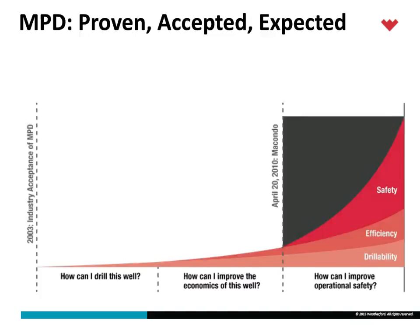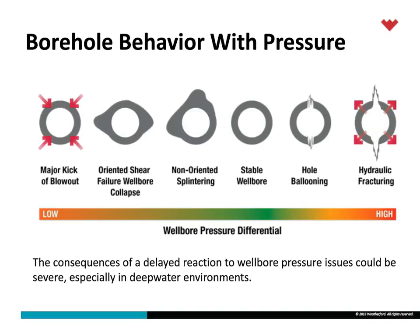This slide is the basis for all the technology we're using. From the far right-hand side of the screen, which is hydraulic fracturing of a weak reservoir, an under-pressured reservoir, an unconsolidated reservoir — because the mud weights are too high, or because the equivalent circulating density due to pump rate or viscosity is causing bottom hole pressure to be too high — these are things we can easily overcome with some of these technologies.